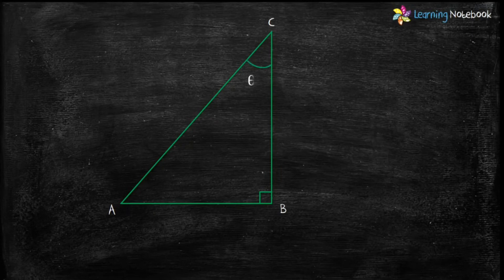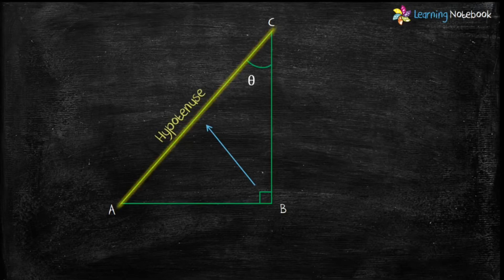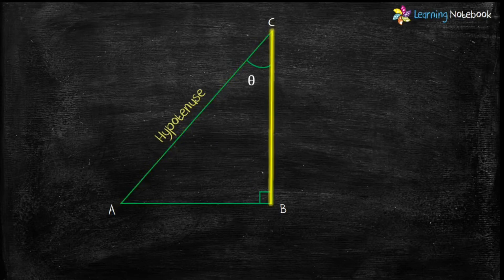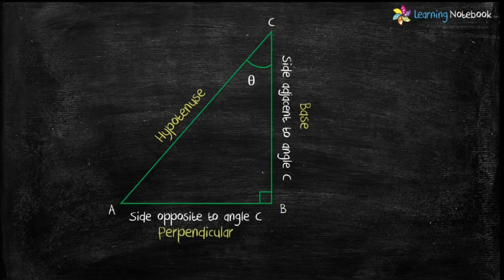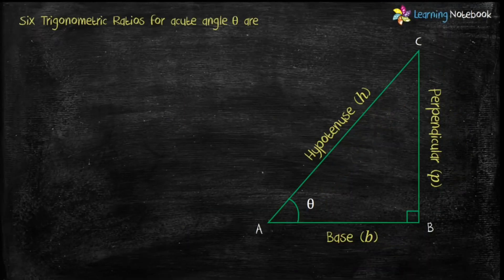Now let's consider angle C as theta. Hypotenuse AC remains the same, as it is the side opposite to the right angle. The side on which both 90 degrees and theta lie is the base, so base equals side BC. The side opposite to angle C is the perpendicular, therefore perpendicular is side BA. So in triangle ABC: base equals AB, perpendicular equals BC, hypotenuse equals AC, and angle A equals theta.